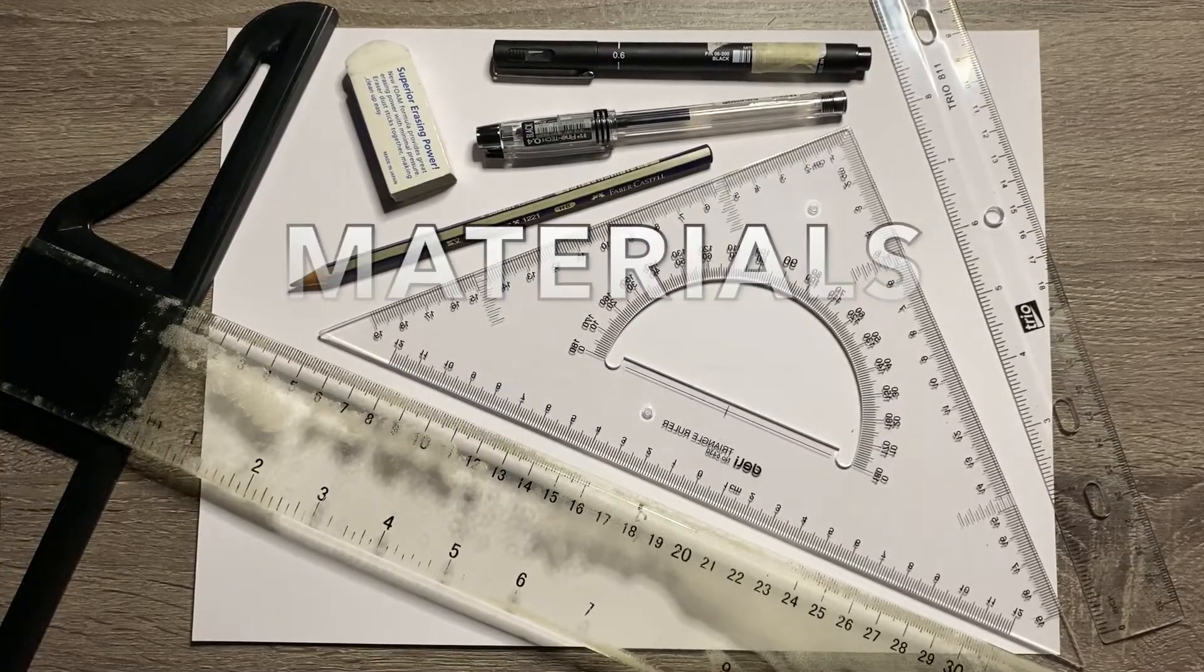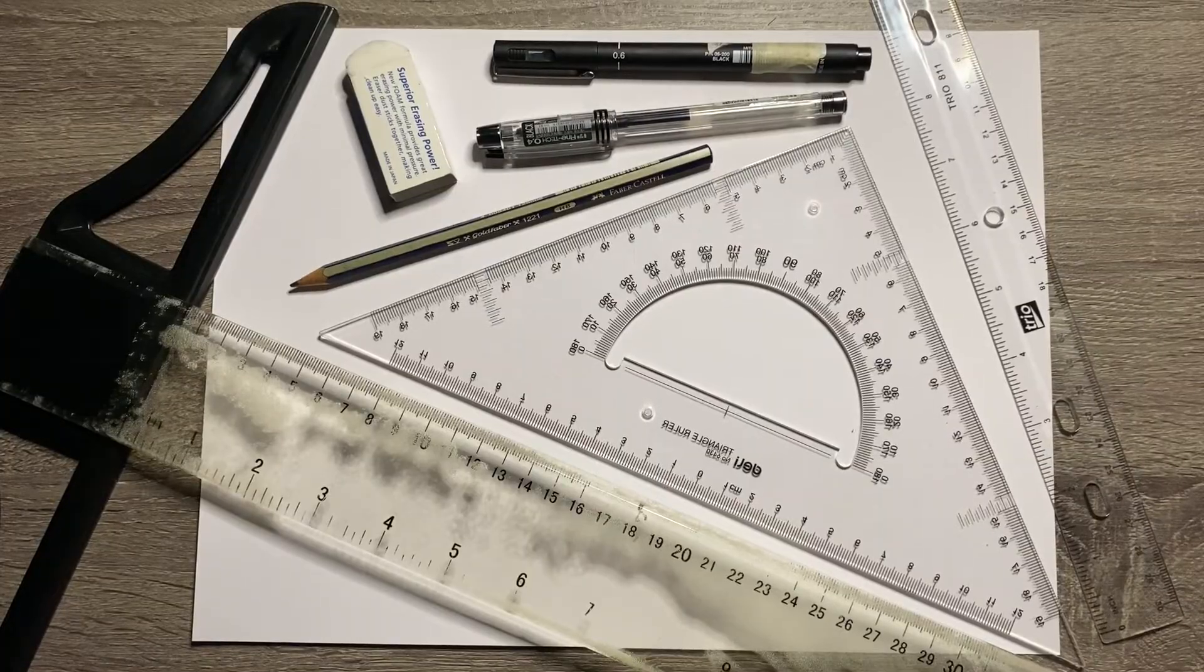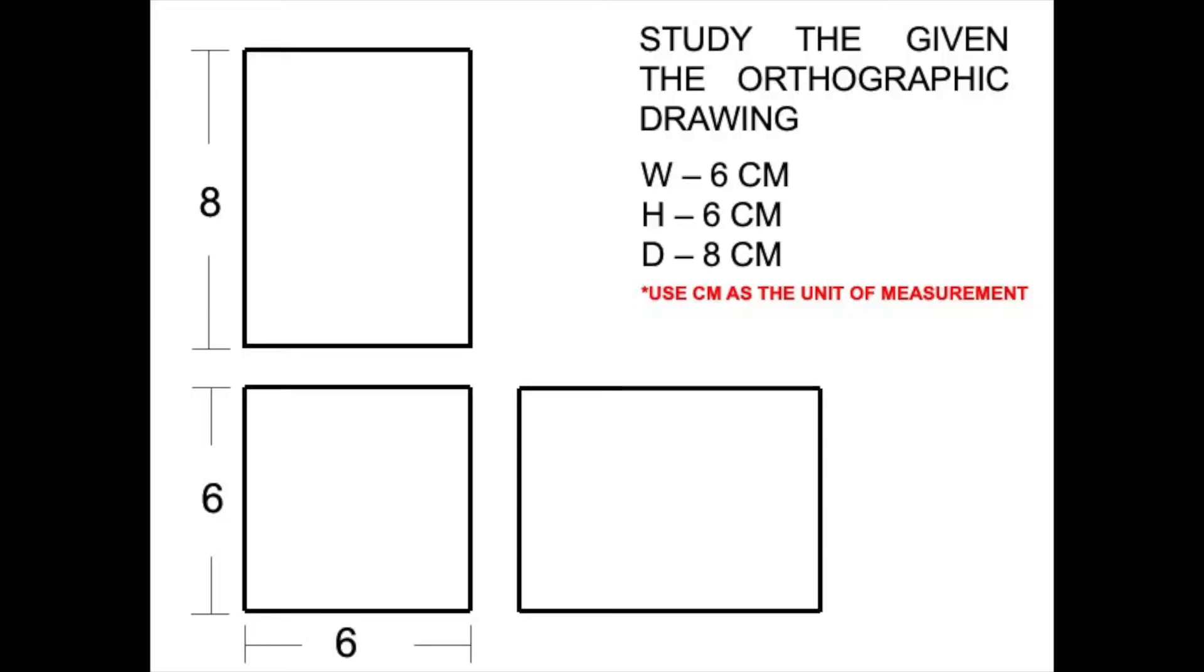Here are the materials needed. Take note that we will be using a 45 degrees triangle. And this is going to be our orthographic drawing that we need to convert.